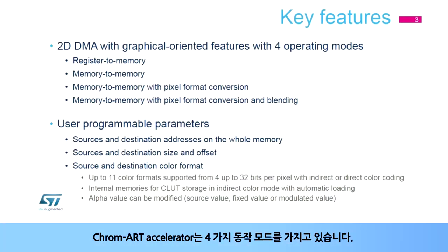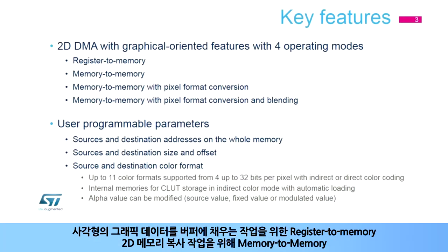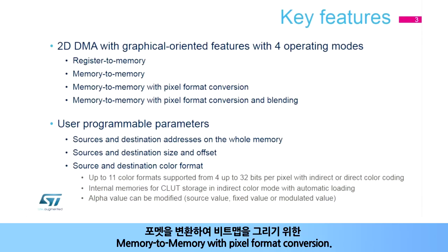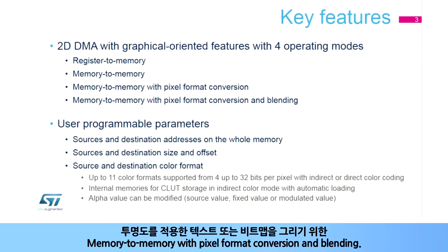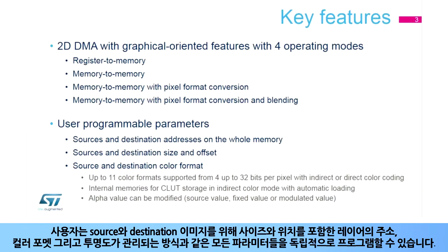The Chroma Art Accelerator has four operating modes: register to memory for rectangle filling operations, memory to memory for 2D memory copy operations, memory to memory with pixel format conversion for bitmap drawing with format conversion, and memory to memory with pixel format conversion and blending for bitmap or text drawing with transparency.